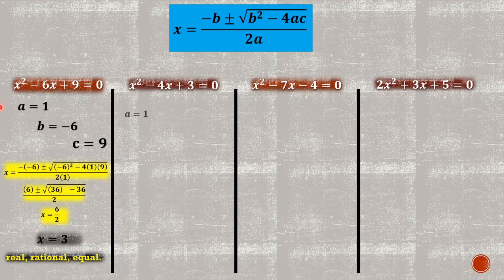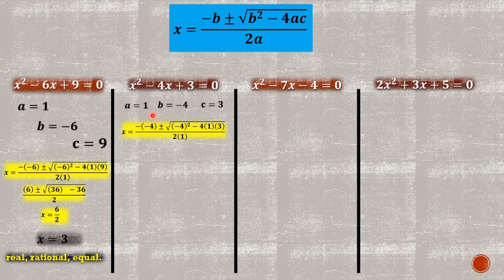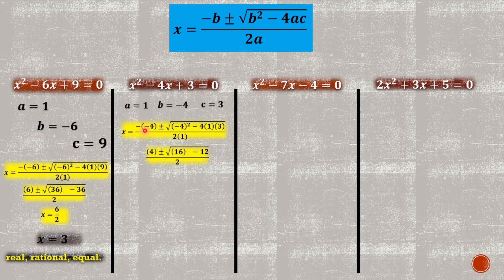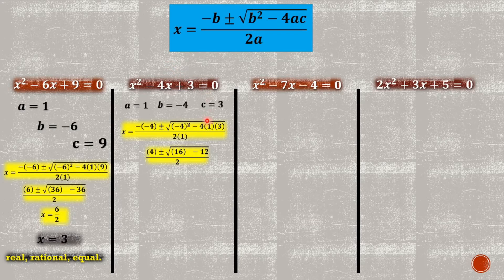Again, we need to identify the value of A, B, and C. The values here are one, negative four, and three. Second step, we substitute those values into the quadratic formula: negative of negative four plus or minus square root of negative four squared minus four times one times three, all over two times one. Performing the operations, we get four plus or minus square root of 16 minus 12, all over two.